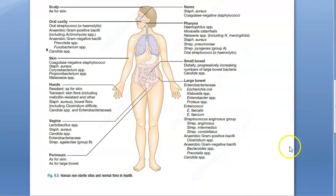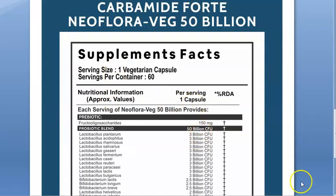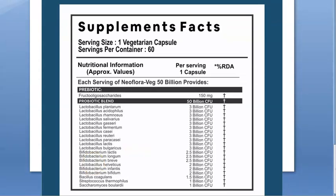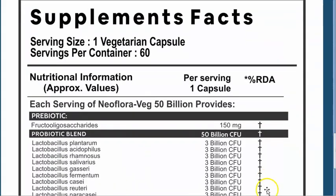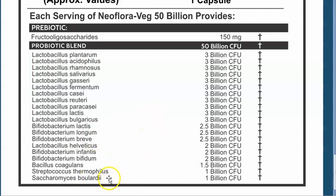When you buy probiotics in the shop, what are they giving you? They are giving you Lactobacillus — which we saw in the vagina — Bifidobacterium, Bacillus coagulans, Streptococcus thermophilus, and Saccharomyces, which is a fungus. All of these are in that probiotic bottle.